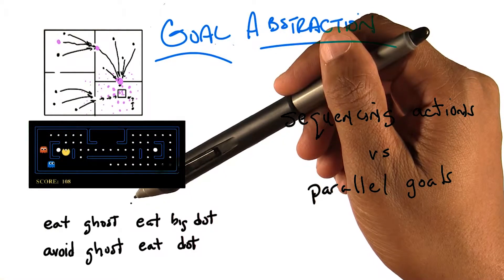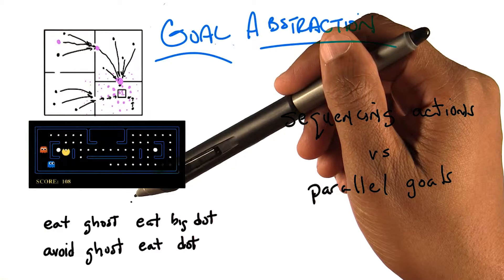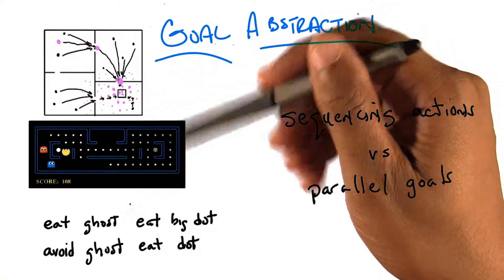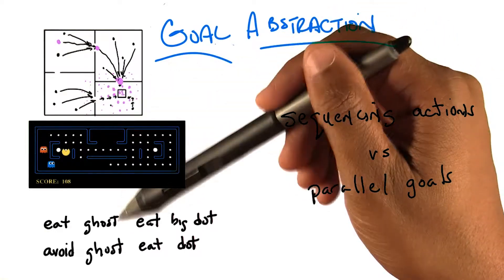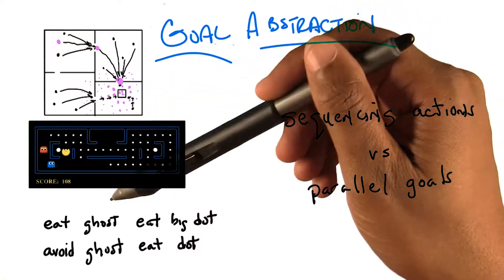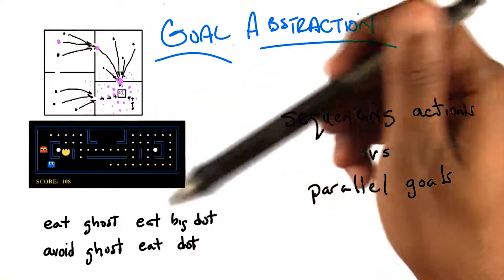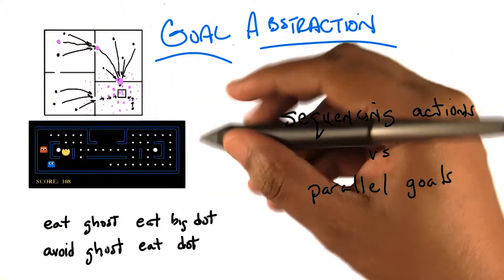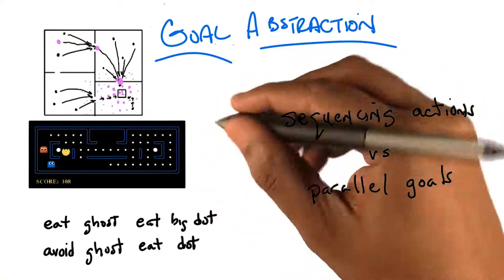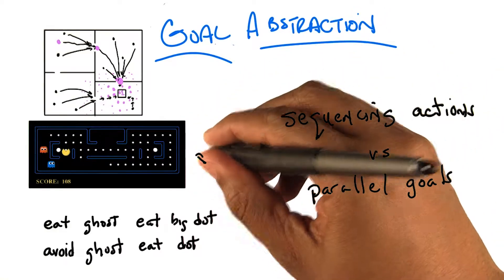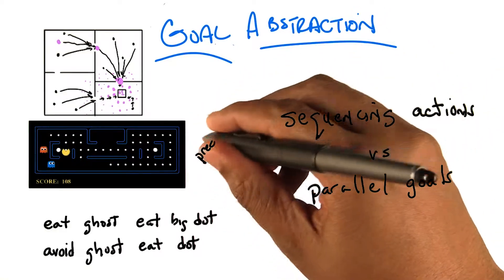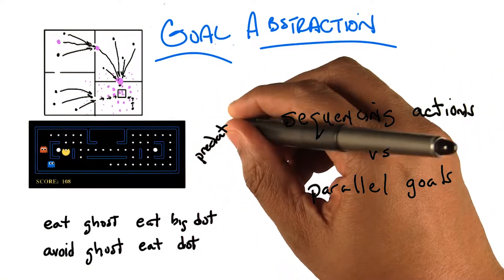That example makes more sense to me than the navigation example. Sure, but I think conceptually they're the same — it's just easier to think about it. In fact, we actually have a name for these kinds of things. We call them predator-prey scenarios.